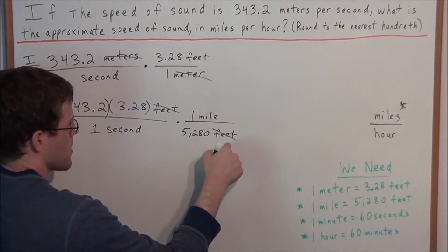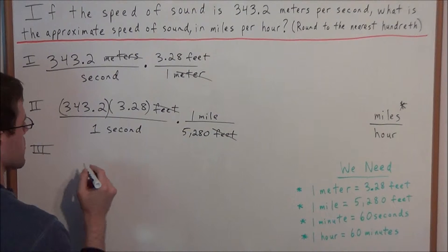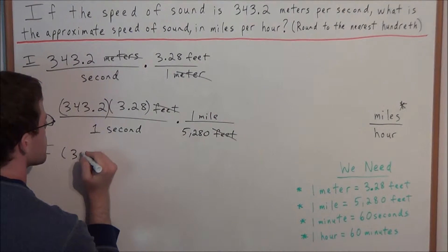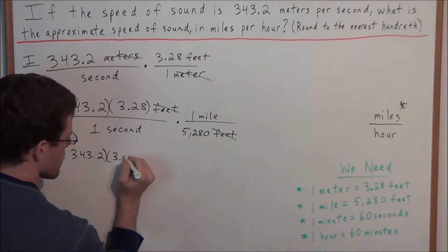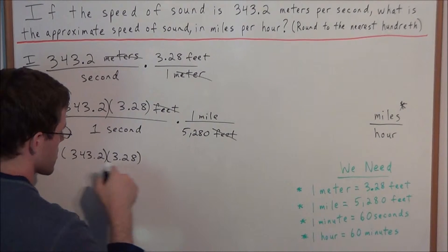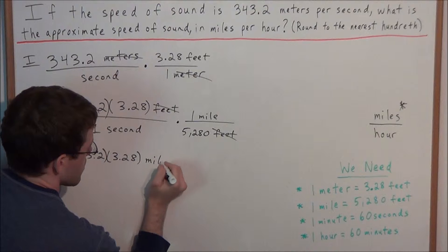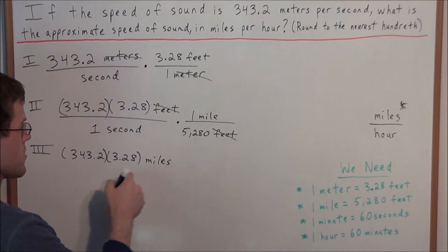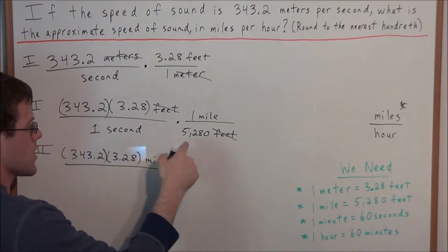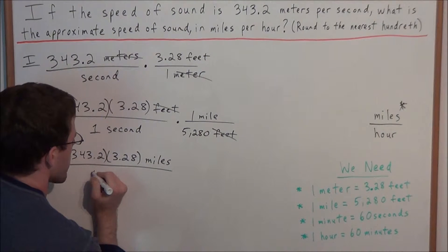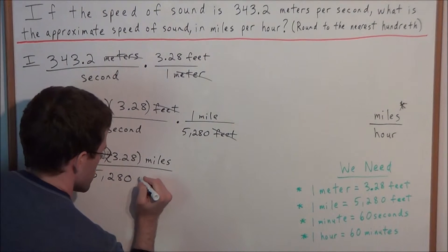We have feet in the numerator and the denominator, so when those cross off, our next line reads: 343.2 times 3.28 times 1. The only unit left in the numerator is miles, since feet canceled out. In the denominator, 1 times 5,280 is 5,280, and all we have left is second. So we now have miles per second.